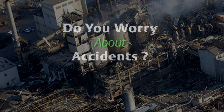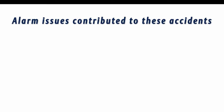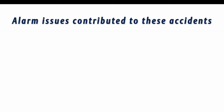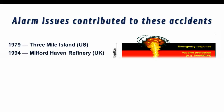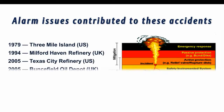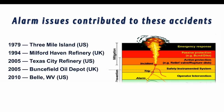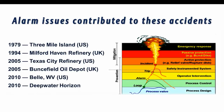Do you worry about the potential for an accident? Are you responsible for avoiding them? If so, you are probably also concerned about the effectiveness of your alarm management system. If you look at the layers of defense against an accident, you will observe that operator intervention is what lies between process control and a trip. In the case of all of these accidents, the operator action failed in large part due to the ineffectiveness of the alarm system.